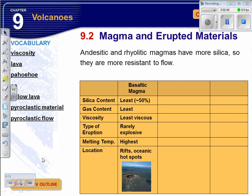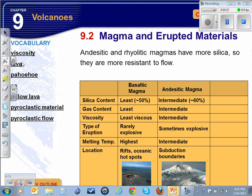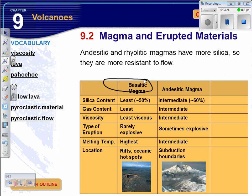The second class is andesitic magma. The silica content is a little higher, gas content is a little higher, they're a little more sticky, and sometimes explosive. Mount St. Helens is an example — it blew half the mountain off in 1980. The melting temperature is at a middle level, and typically these volcanoes occur along subduction boundaries. Basaltic magma tends to be the 'flowy' type and rhyolitic magmas tend to be the 'blowy' type.